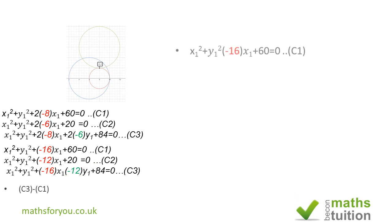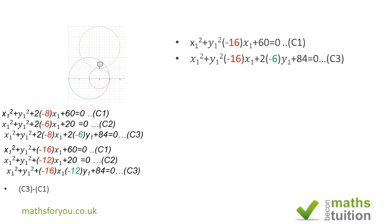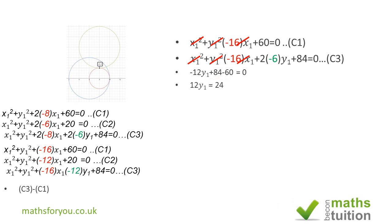Subtracting C1 from C3: the x² and y² terms cancel, the x terms cancel too, and we're left with −12y + 84 − 60 = 0, which gives −12y + 24 = 0. Rearranging: 12y = 24, so y₁ = 2.